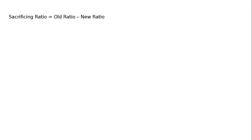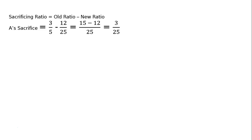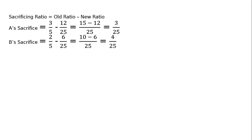We have to find out the sacrificing ratio to distribute the premium money brought in by new partner C. Sacrificing ratio equals old ratio minus new ratio. A's sacrifice: old share 3 by 5 minus new share 12 by 25. LCM is 25 — 15 minus 12 is 3 upon 25. B's sacrifice: 2 upon 5 minus 6 upon 25. LCM 25 — 10 minus 6 is 4 upon 25.